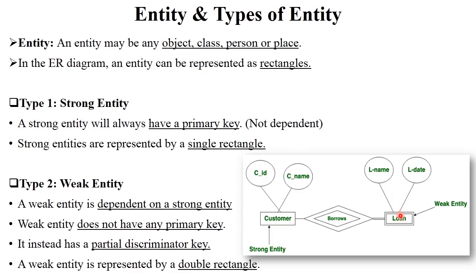The weak entity has a discriminator key — here that is L name, called the partial discriminator key. The main primary key is customer ID. Loan is derived from the customer entity. The weak entity is always represented by a double rectangle. Strong entity always has a primary key; weak entity depends on strong entity and has a discriminator key.